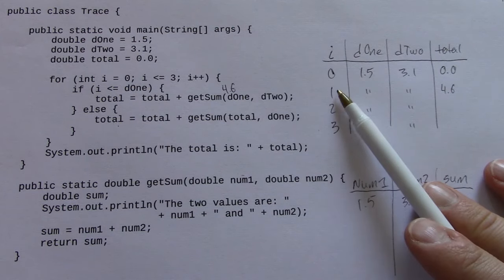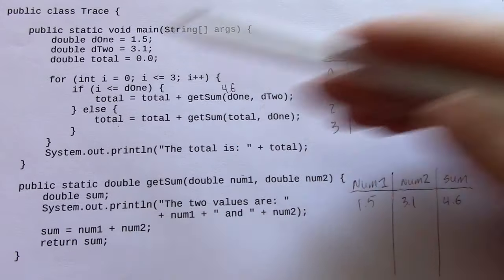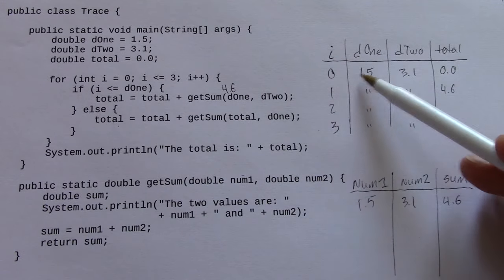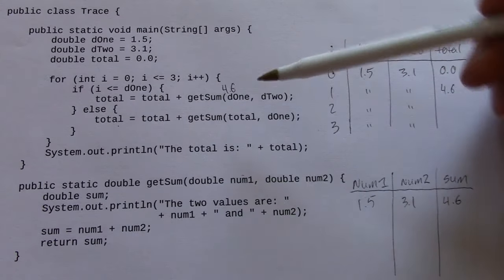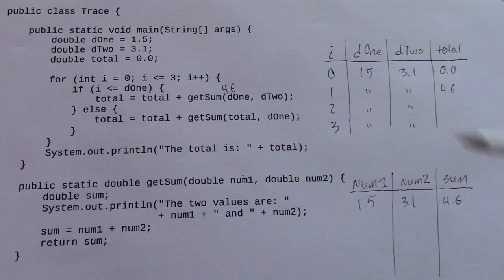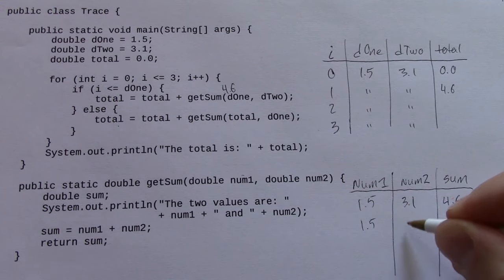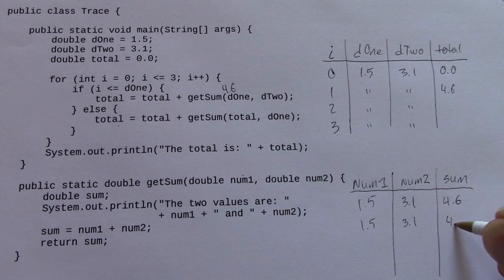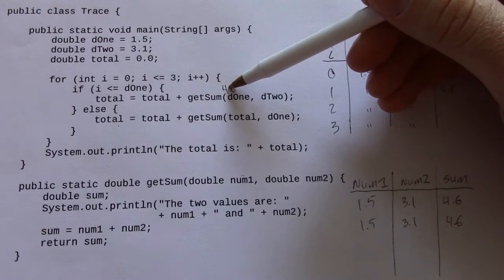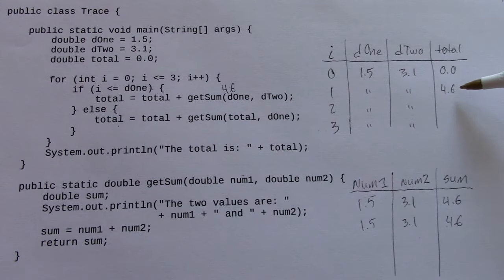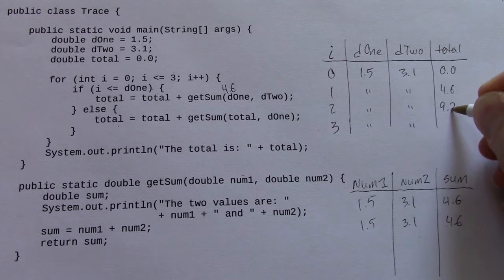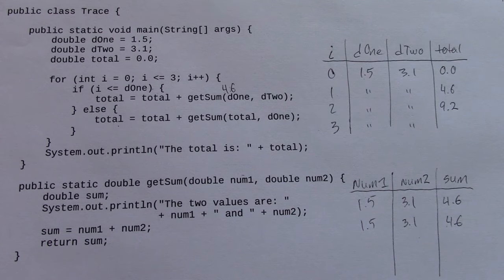So let's see what happens when i equals 1. If i is less than or equal to d1, yep, that's true, 1 is less than 1.5. So we're going to go into this method again, passing the values d1 and d2. Well that's exactly what happened last time. But now notice that when we return 4.6, I'm adding that to total, which is already 4.6. So the next value of total is going to be 9.2, right? 4.6 plus 4.6.